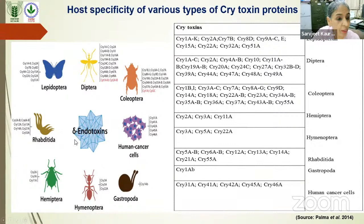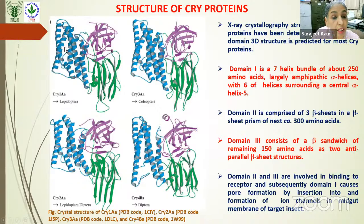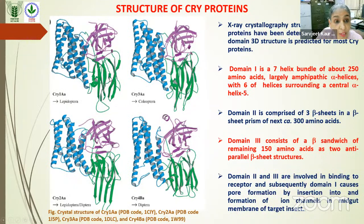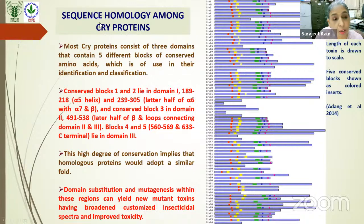Regarding the structure of Cry proteins, most have a three-domain structure. Domain 1 (blue) is alpha-helical, Domain 2 is a beta-sheet, and Domain 3 is a beta-sandwich. The first 250 amino acids are in Domain 1, the next 300 in Domain 2, and the remaining 150 in Domain 3. Domains 2 and 3 are said to be involved in receptor binding to the insect midgut epithelium, while Domain 1 forms a pore in the insect midgut membrane, leading to pore formation and insect death.